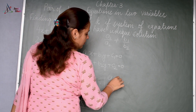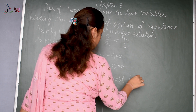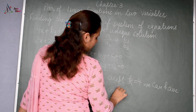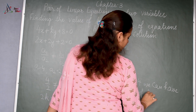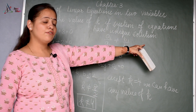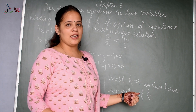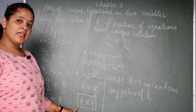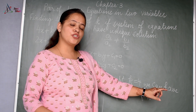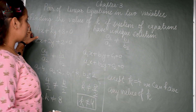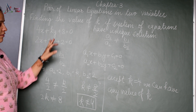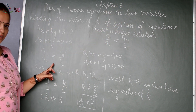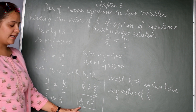So except k = 4, k can have any value. If the system of equations has a unique solution, k can be anything except 4. That means k ki value 4 nahi ho sakti — k ki kuch bhi value ho sakti hai in these two linear equations. This is the condition for unique solution.